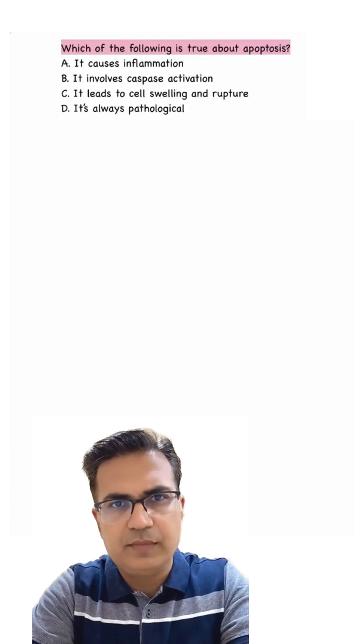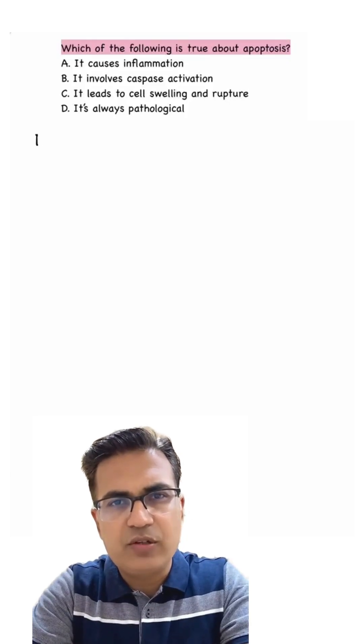Which of the following is true about apoptosis? Cell death happens in two ways: necrosis and apoptosis.